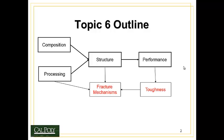The outline for Topic 6 basically follows the big picture. Remember that the big picture has four key components: composition, or what a material is made out of; processing, or how we turn a raw material into a desired shape. Those two things together combine to give us the structure of a material, or what the interior of that material looks like. And finally, that structure determines the performance of the material — what its properties will be.